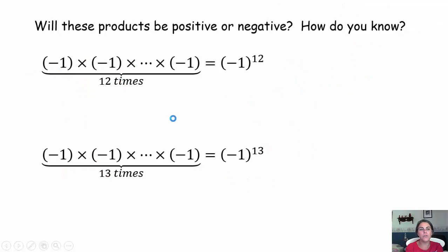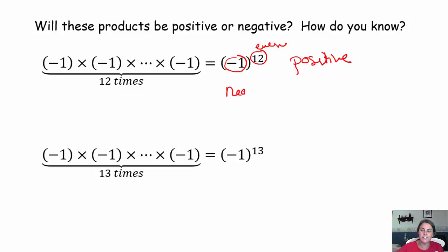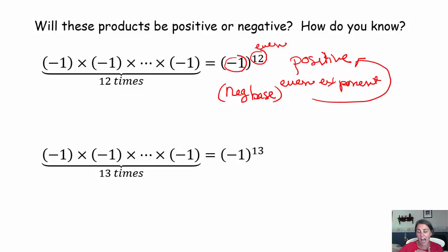Now I'd like you to try a few on your own. Will these products be positive or negative, and how do you know? Pause the video, try them out, come on back. Immediately I see I have a negative base raised to an even exponent — I'm guaranteed the result will be positive. Negative base raised to an even exponent — I am guaranteed my result will be positive. I always think of it as pairings: if I have 12 factors, I have six pairs of factors — six pairs of negative times negative, which is a positive.